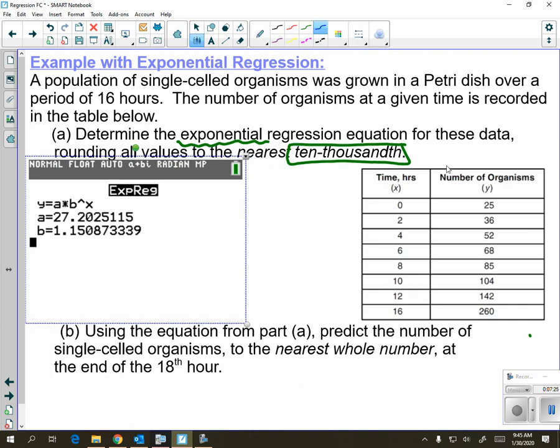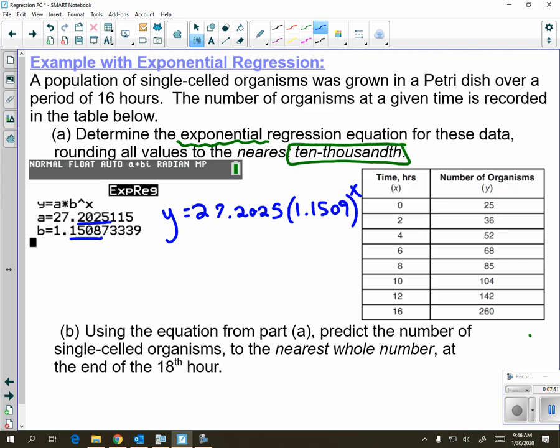Now we're going to round to the nearest ten thousandth, which is four decimal places. So we have y equals, a was 27.2025, b is 1.1509 because we're rounding up, to the x power as your answer.